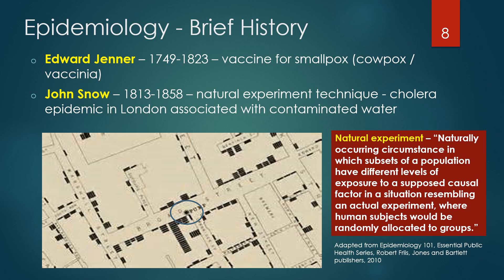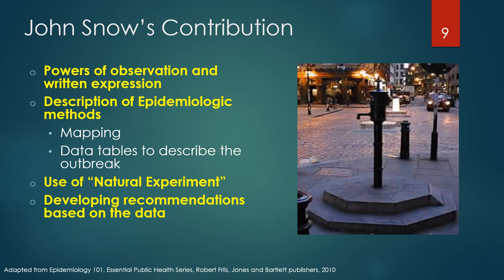A natural experiment is defined as a naturally occurring circumstance in which subsets of a population have different levels of exposure to a supposed causal factor, in a situation resembling an actual experiment where human subjects would be randomly allocated to groups. John Snow made several contributions to the field of epidemiology: the powers of observation and written expression; description of epidemiologic methods like mapping and data tables to describe an outbreak; the use of the natural experiment; and developing a practical recommendation based on epidemiologic data. Snow recommended removing the pump handle. While the parish's board of guardians was skeptical, they agreed and the spread of cholera in the district was halted. This picture is the famous Broad Street pump with the handle removed.